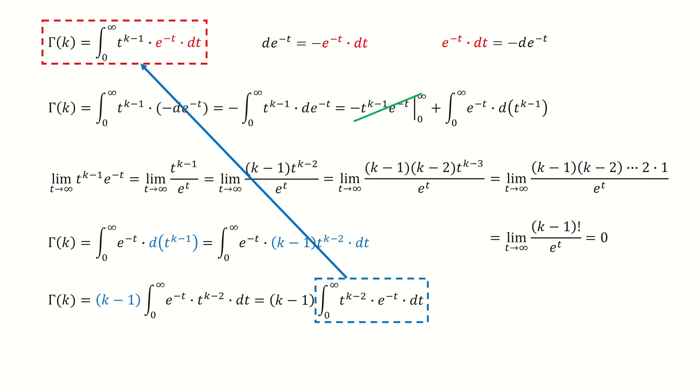Now, if you compare this integral inside the blue box with the integral inside the red box, you will find this integral inside the blue box is just equal to the integral in the red box when you replace k by k minus 1. So this term inside the blue box equals gamma k minus 1.